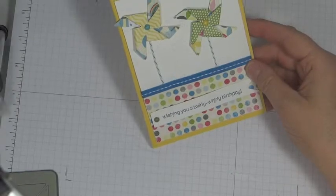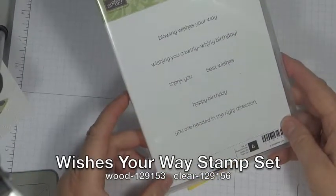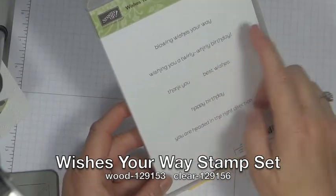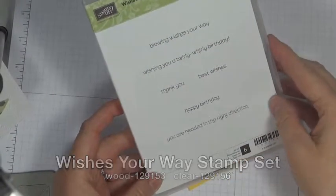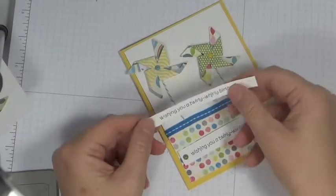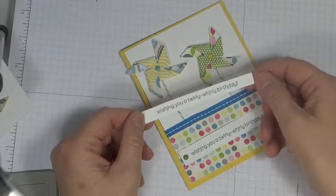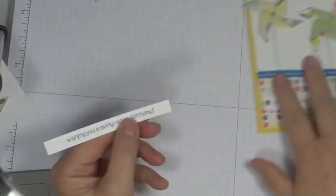And the next thing I want to do is make a banner doing the wishing you a trolly holly birthday. I'm using the Wishes Your Way stamp set. Wishing you a trolly holly birthday just went with this card. I stamped it using the Island Indigo on just a piece of Whisper White.